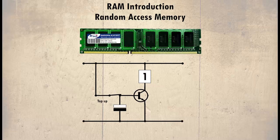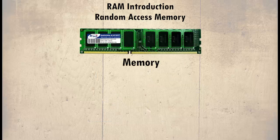A signal is passed through the cells to check each and every transistor. If they are set to 1, they are refreshed; otherwise they are passed over. This process is called dynamic RAM, and this is where dynamic RAM gets its name.